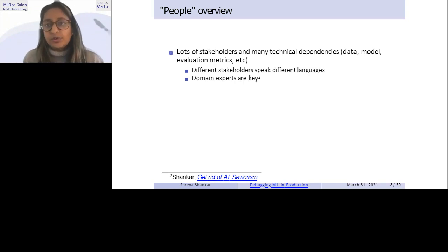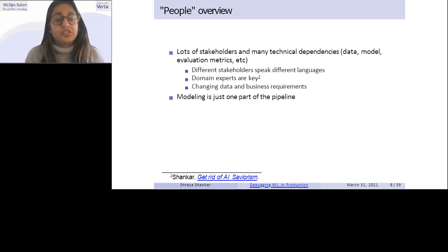A model to a data scientist might be different from a model to a PM. A PM might think the model is everything from the inputs to ML API to outputs, whereas the data scientist might think, like, oh, the model is specifically the random forest or something. That's a small component of that. So kind of how do you bridge these two languages, or how do you bridge this gap in understanding? Domain experts here are key. Like, a lot of times when you do apply to ML, you're working in a different domain. Like, I've worked in cars, for example. I don't know anything about cars. So how do you do intelligent feature engineering when you don't have a firsthand understanding of a problem going on? There's also a lot of changing data and business requirements.